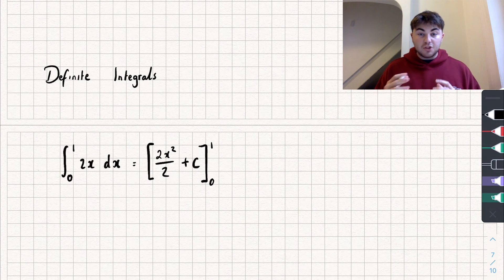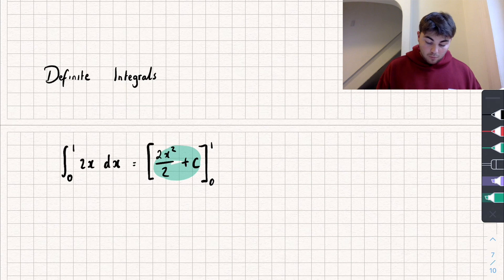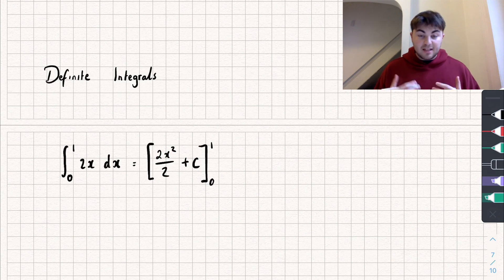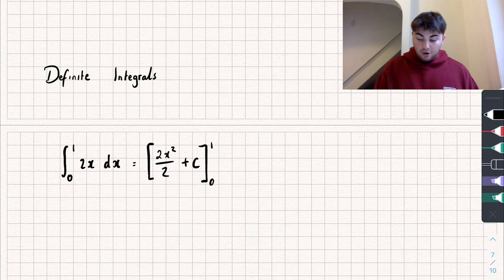From here all we have to do is substitute 1 into our integral we calculated and then subtract the same thing but where we've substituted in 0. So let's do that here.